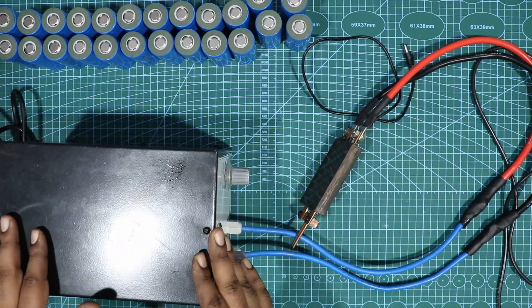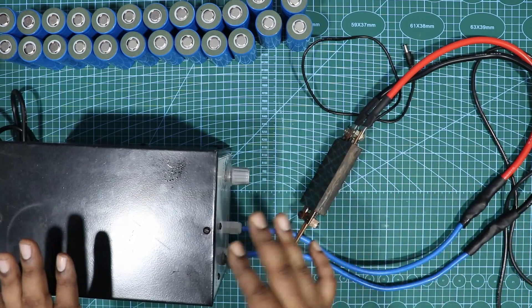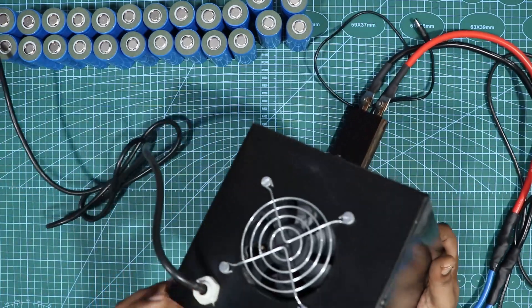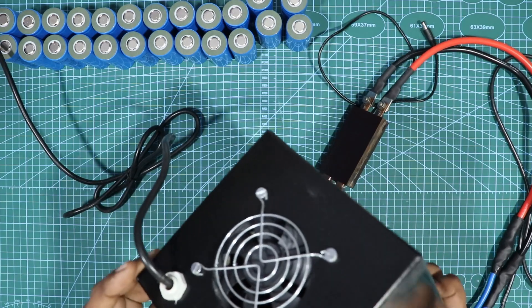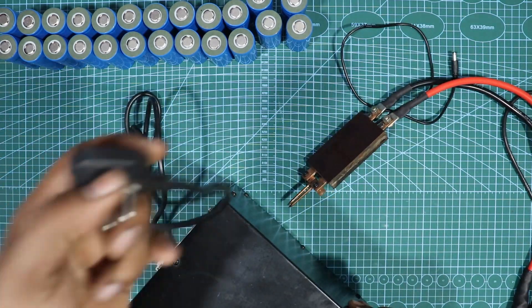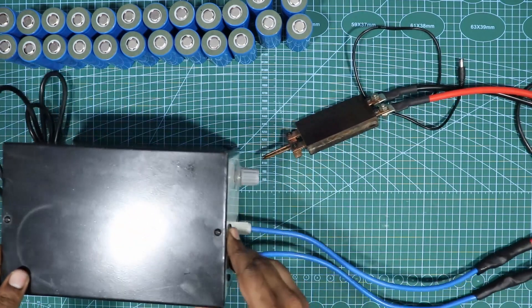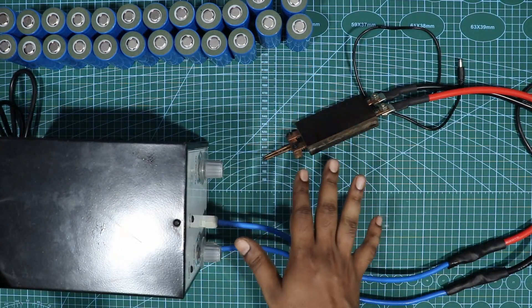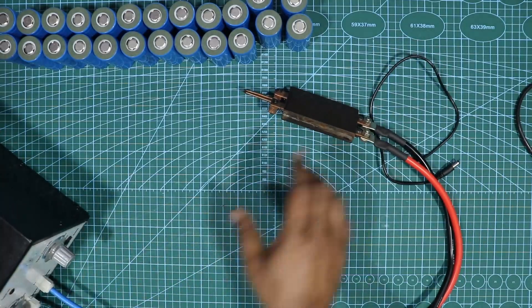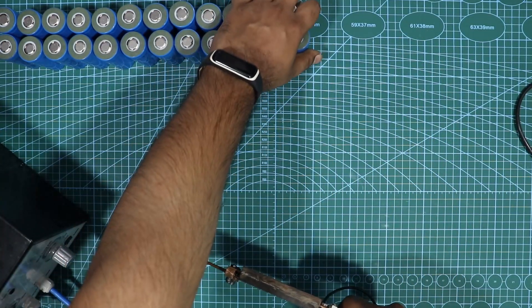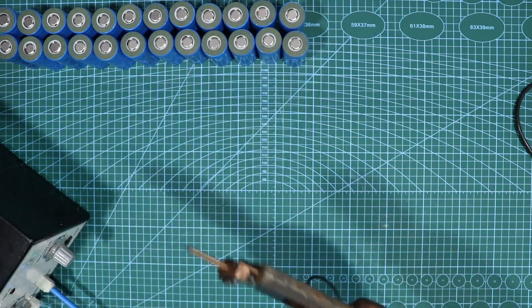If you need the spot welder you could get it from my website and this spot welder comes with one year warranty. You also have a cooling fan at the end so that this can work continuously. So let's do a spot welding and I'll show you how good the quality is, but before that let me get all the batteries connected on a holder.